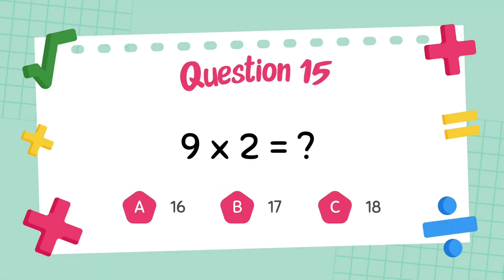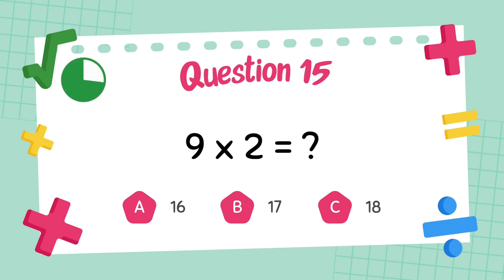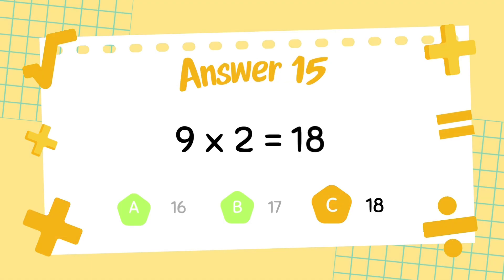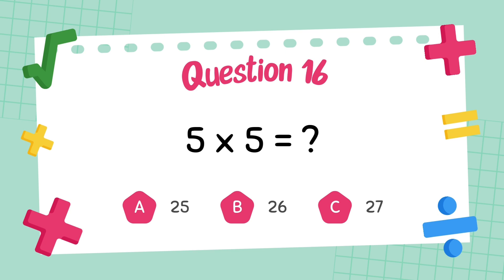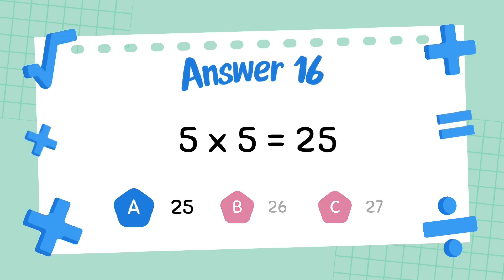What is 9 multiply 2? The answer is 18. What is 5 multiply 5? The answer is 25.